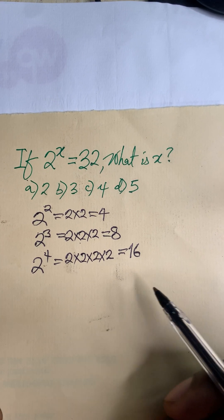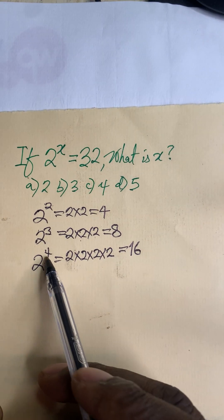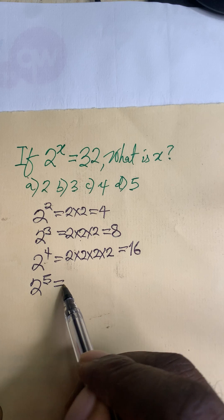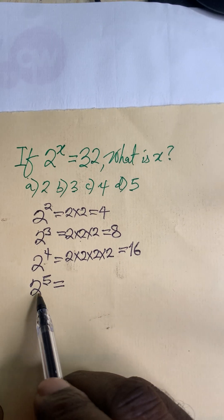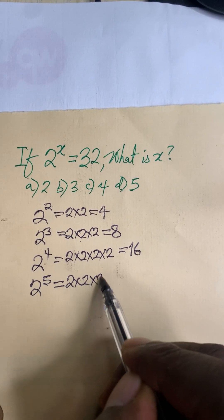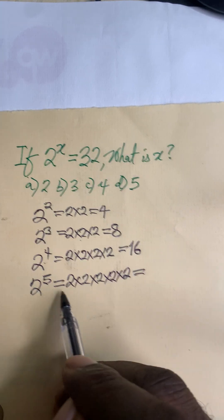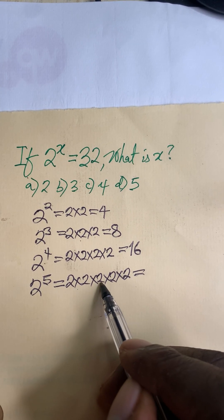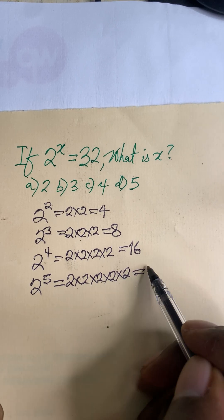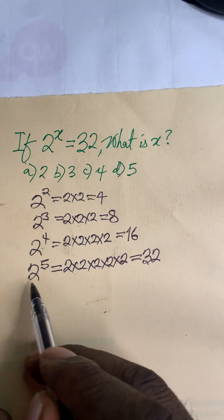16 is still not 32, so I'll try the next one. 2 to the power of 5 means 2 times 2 times 2 times 2 times 2. That's 4, then 8, then 16, then 16 times 2 = 32. We got 32!